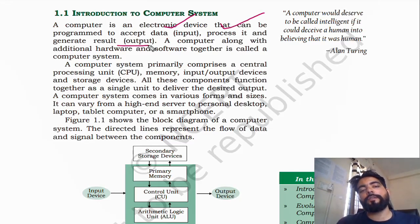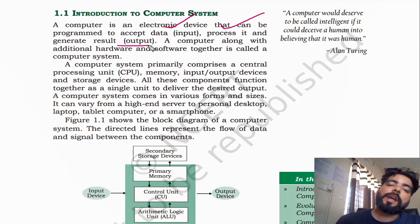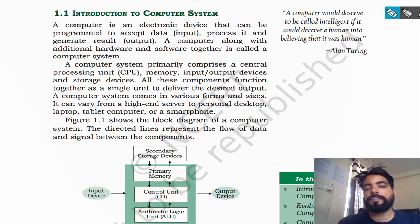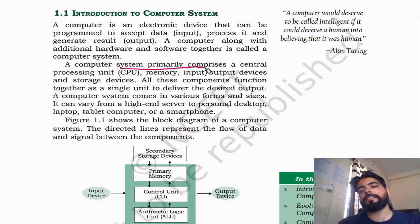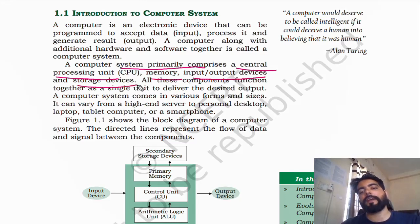A computer along with additional hardware and software together is called a computer system. A computer system primarily comprises a central processing unit, memory unit, input-output devices, and storage devices.